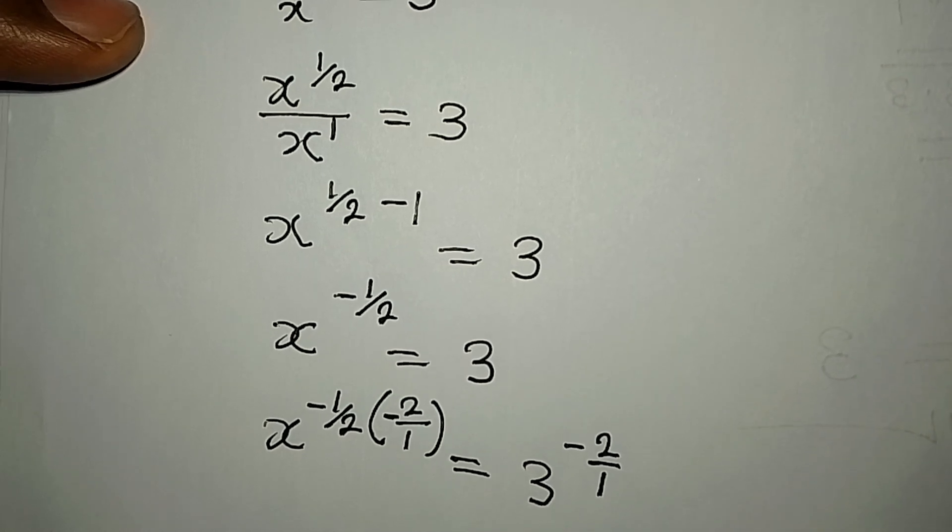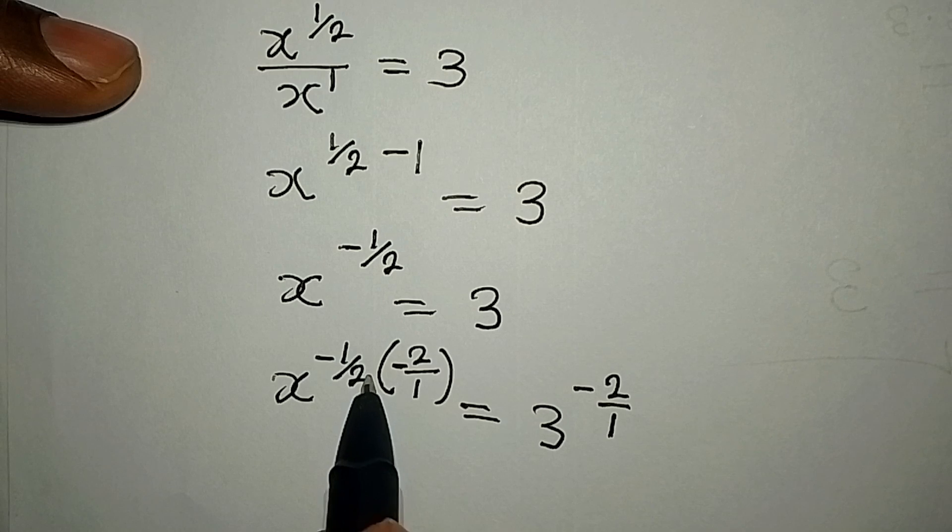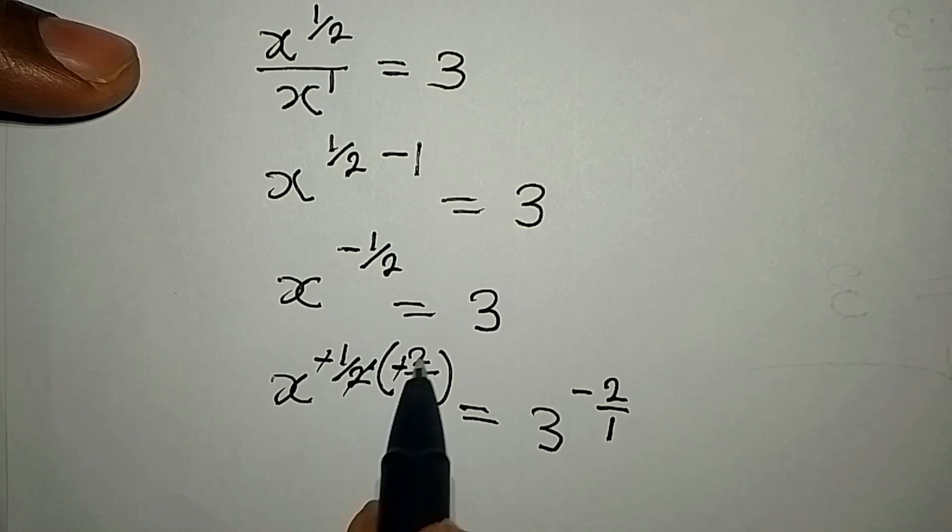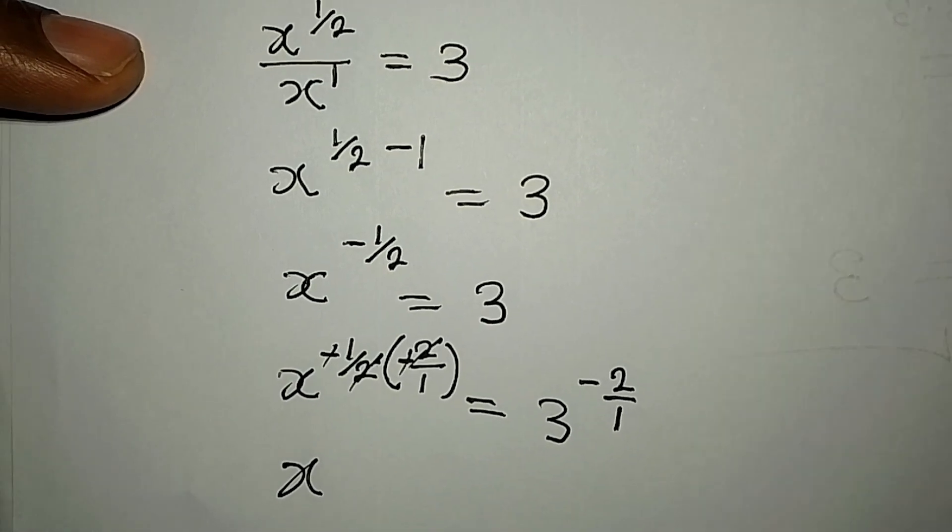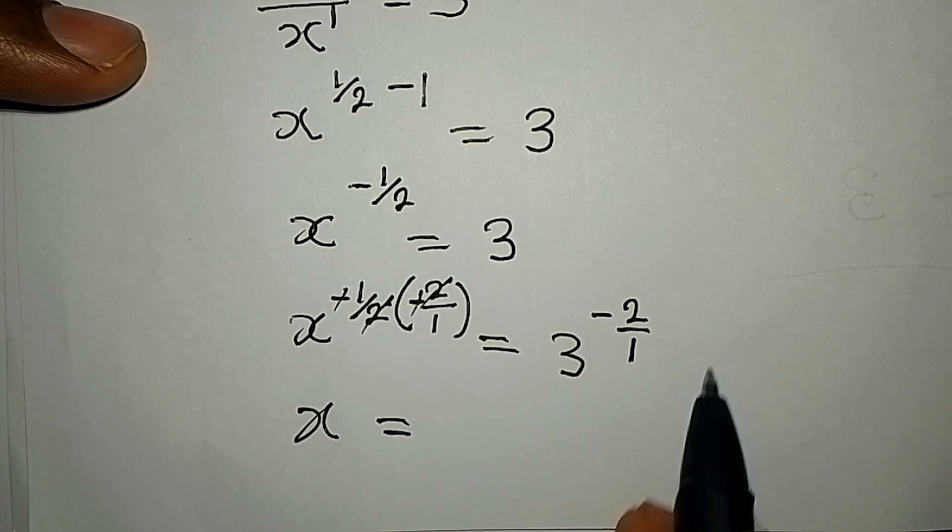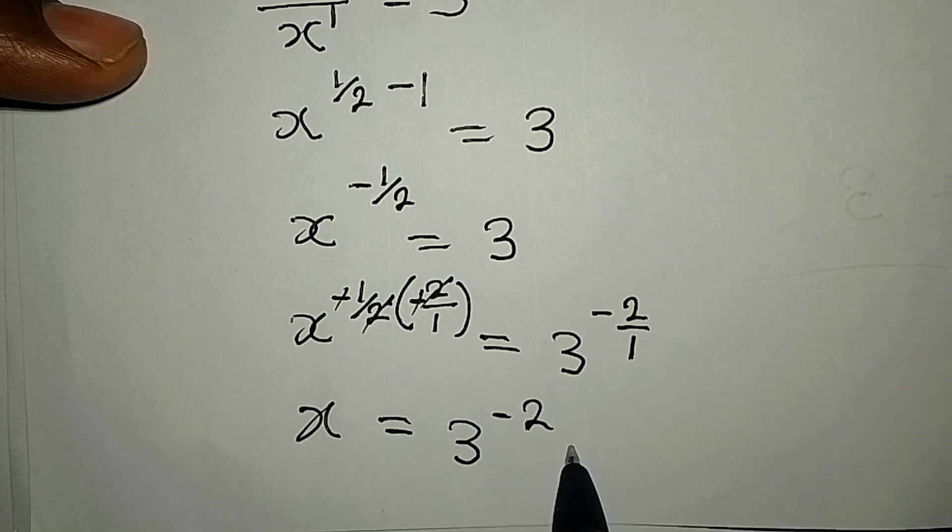To continue with this, this negative will cancel itself, then these two will go with that, and then we have just x over here. Our x from here is now equal to 3 to the power of negative two.